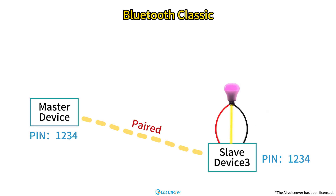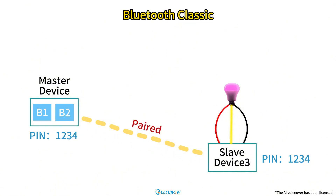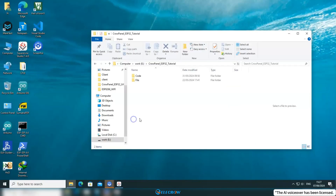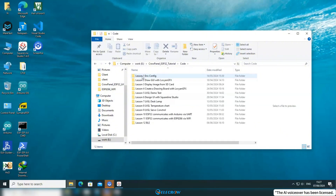In this lesson, I'll use an LED to verify whether Bluetooth communication between two devices is successful. After the Master and Slave devices are paired, clicking button 1 on the Slave device's screen will send a message to the Master device via Bluetooth, while clicking button 2 will send another message. When the Master device receives the first message, it will turn on the LED, and upon receiving the second message, it will turn off the LED. Let's take a look at the Bluetooth Classic code for this lesson.